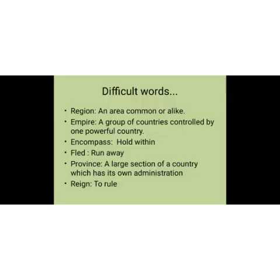So students, here we have some difficult words. Let us understand the meanings one by one. Region means an area common or alike. For example, mountain region — you will see mountains there. Then desert region — that means there will be desert in it. Then island region — that means you will see islands only. So now you will come to understand.